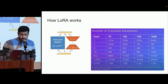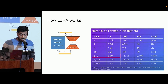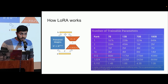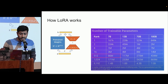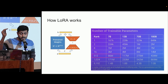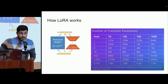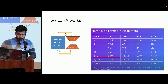Looking at this chart: for a 7 billion parameter model, if I take rank 1, I only need 167,000 parameters to fine-tune. Even at rank 512, I just need 86 million parameters — compared to 7 billion for full fine-tuning.